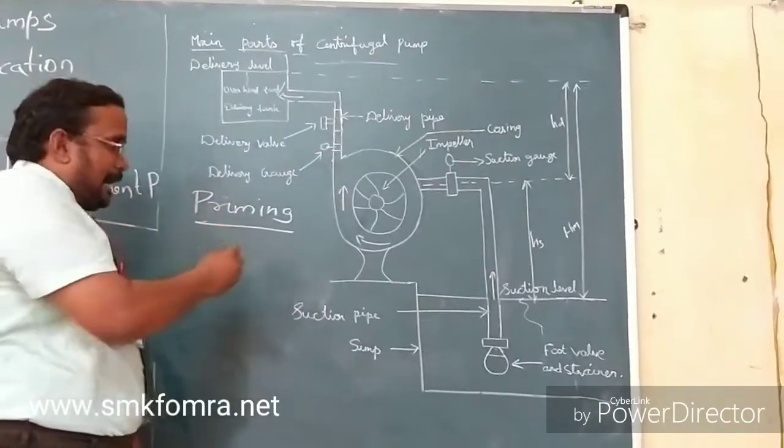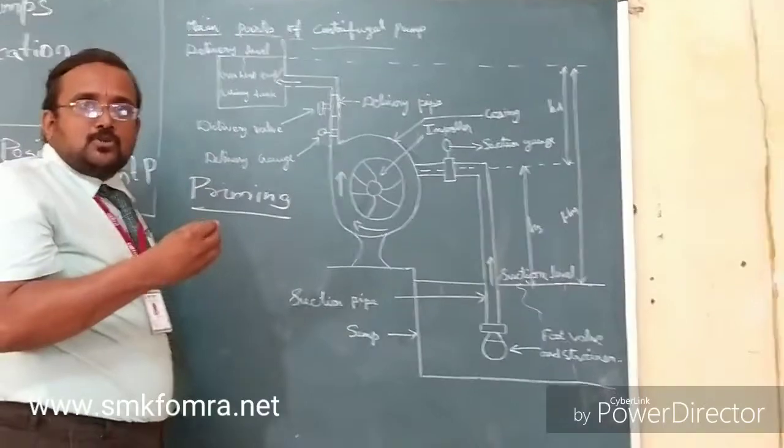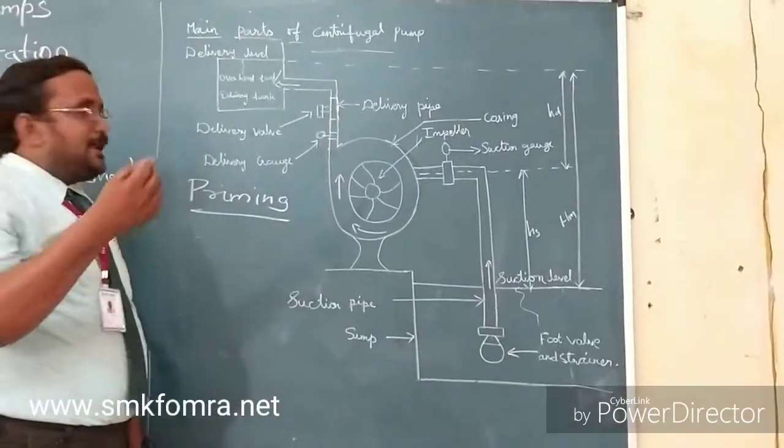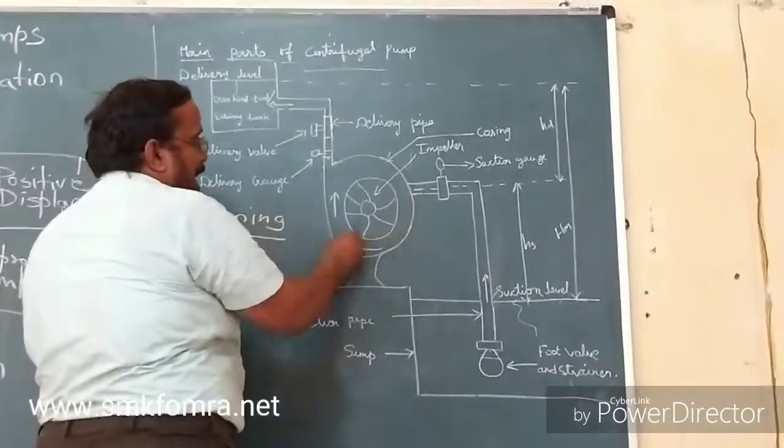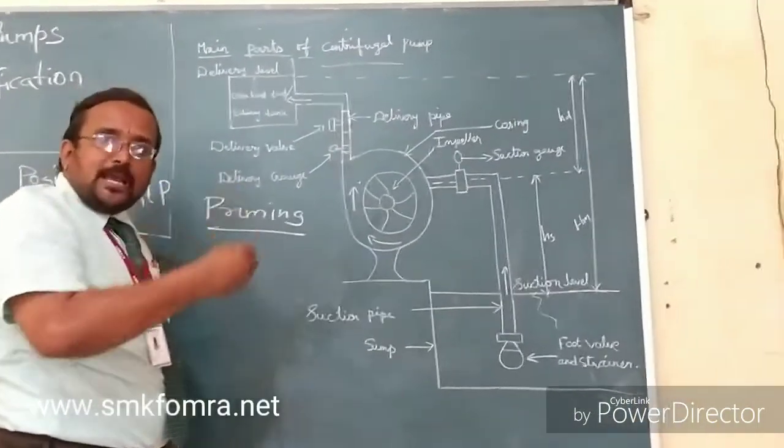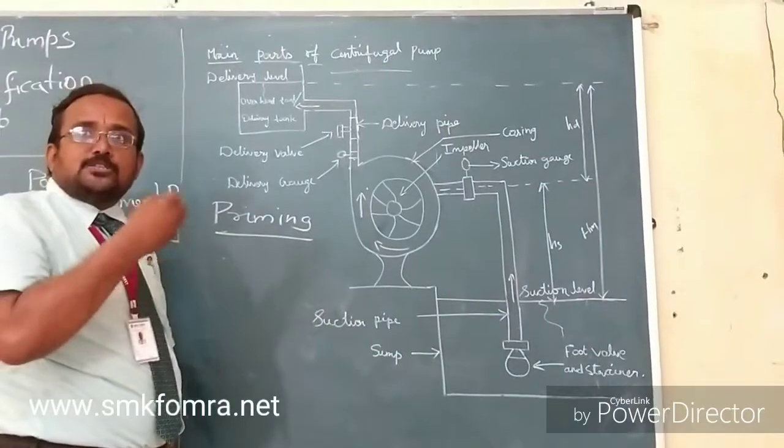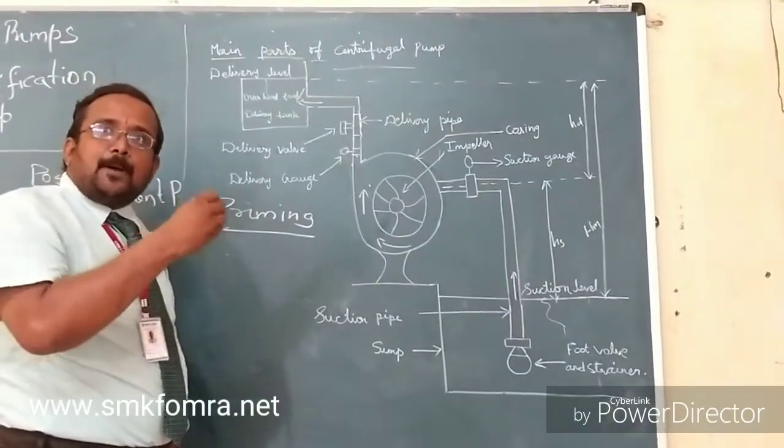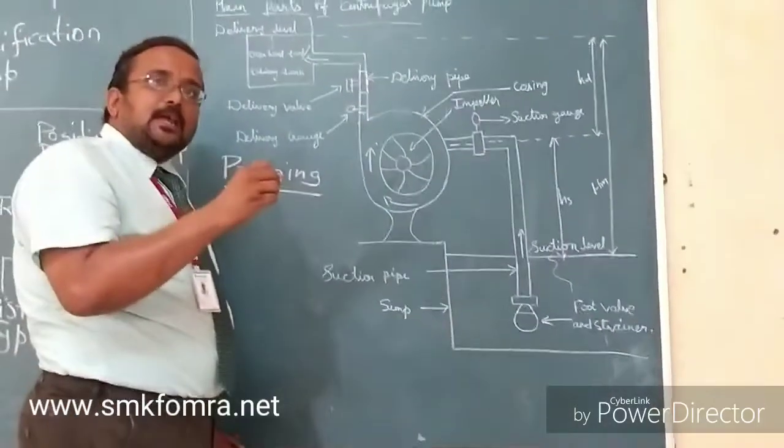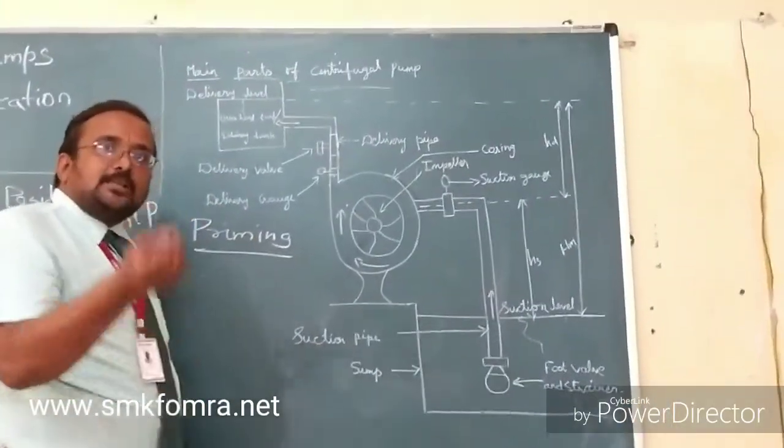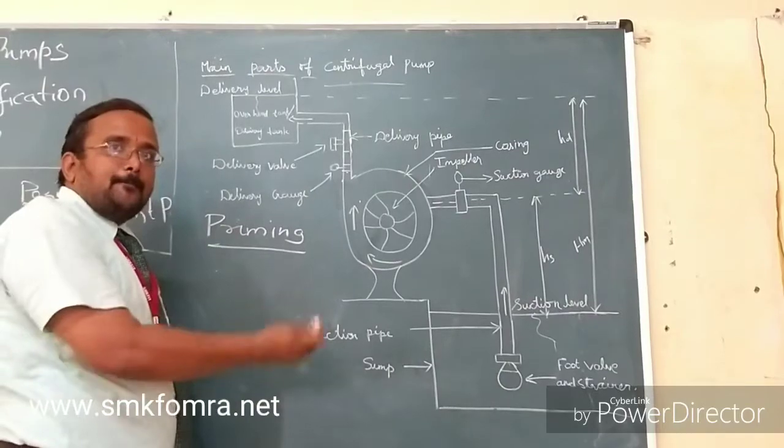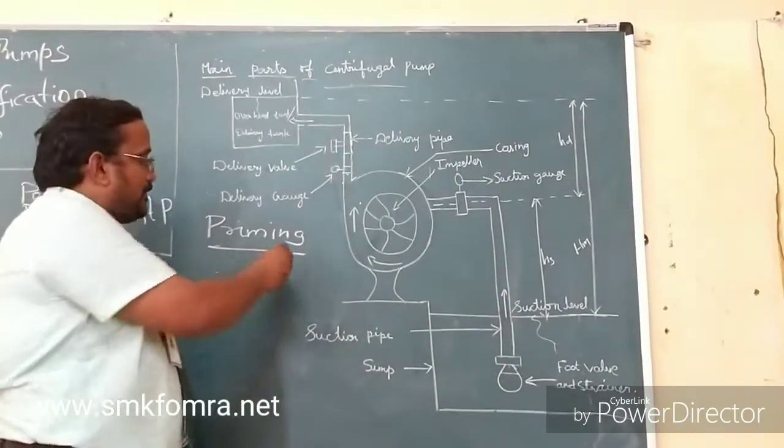Density of air is less than water. So when I rotate the air, the head developed will be less. So I need to fill the casing, the delivery pipe, and the suction pipe with the water. So that when I rotate the impeller at the initial stage, before starting the pump, I will impart certain head to the fluid. That will be proportional to the density. Density of water is more than air. Hence there will be more efficient pumping of the liquid. So that is why we do priming.